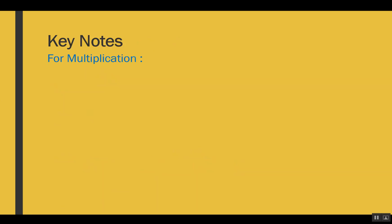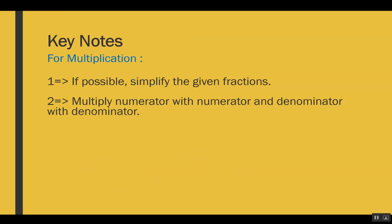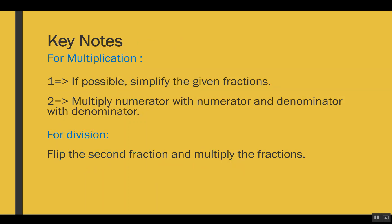For multiplication: step 1 — if possible, simplify the given fractions; step 2 — multiply numerator with numerator and denominator with denominator. For division: flip the second fraction and then multiply the fractions.